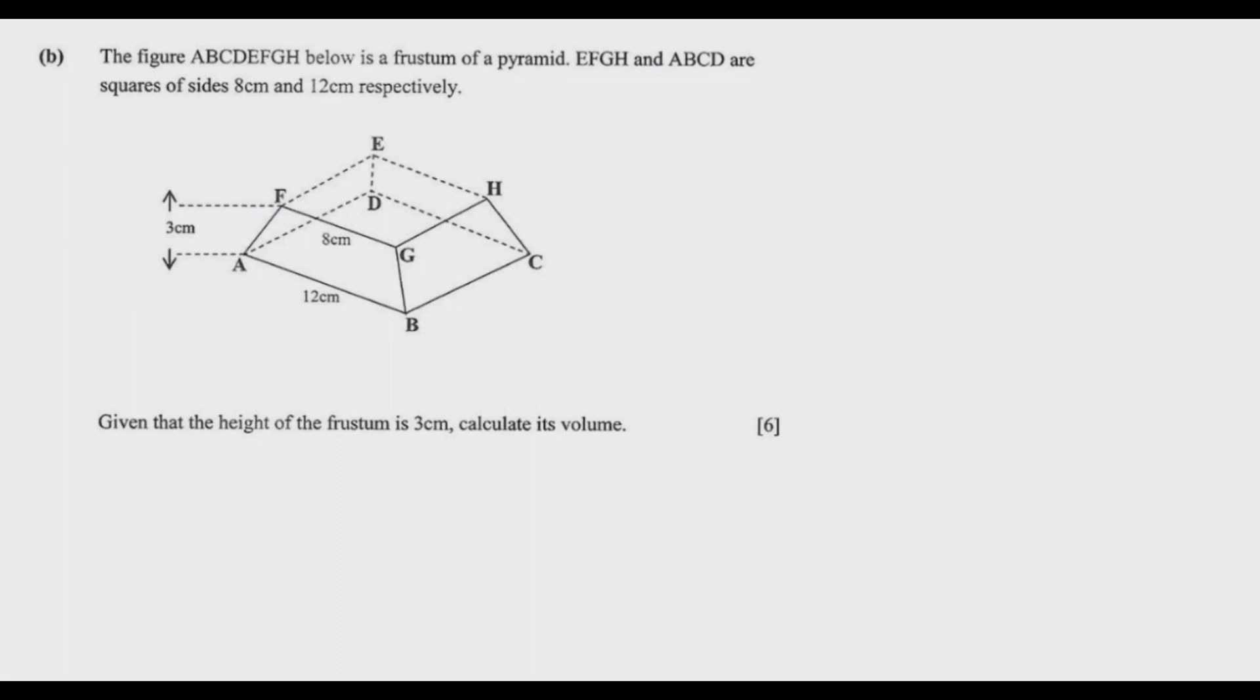The volume of a frustum, just like the volume of a cone, is given by: volume equals one-third times h times (a² plus b² plus ab), where h is the height of the frustum, a is the base, and b is the length of the top base.